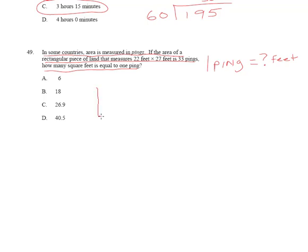It's really easy. Draw the land first, and then draw in your 22 feet times 27 feet and multiply them together to get the area. That area is 594 square feet. Well, look at what they tell us. Right here, they say that 22 by 27 feet is equal to 33 pings.